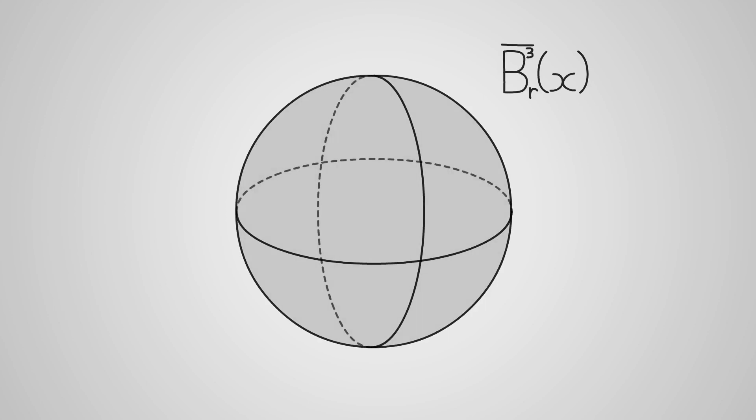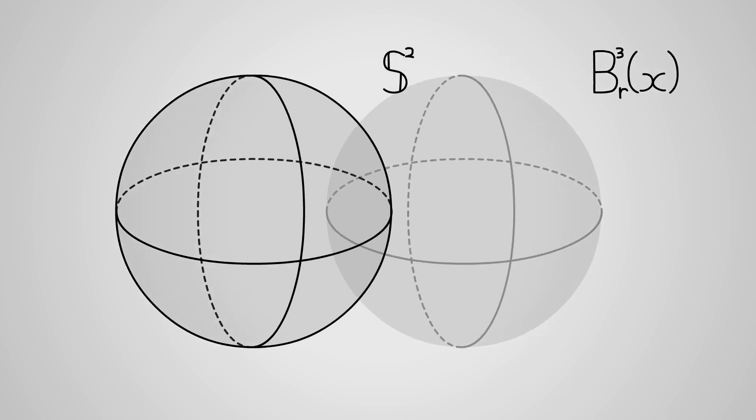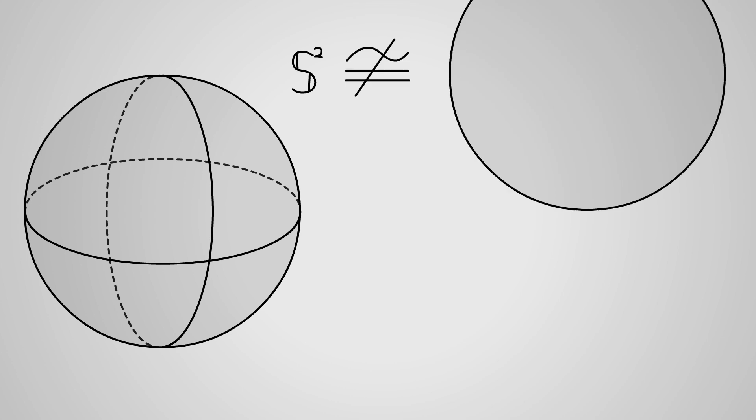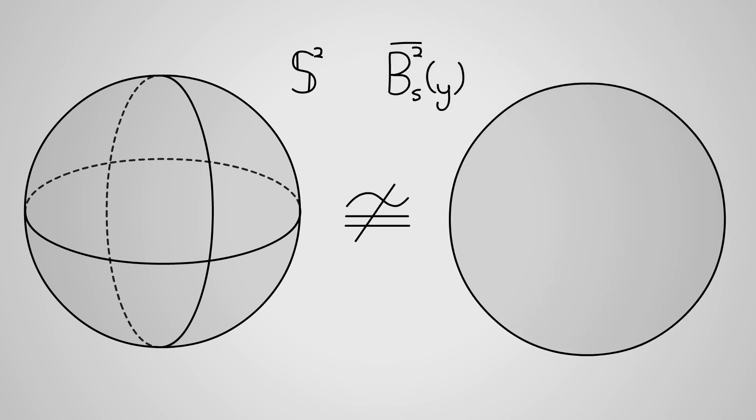Now, a closed n-ball has a boundary too, a sphere of dimension n-1. Notice that this is not the same as a closed n-1 ball. So in the case of closed balls, looking to the boundary doesn't just give us a lower dimensional space, it gives us a different kind of space altogether.